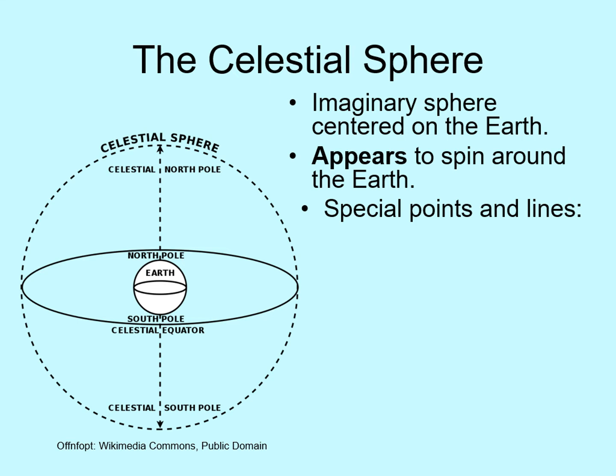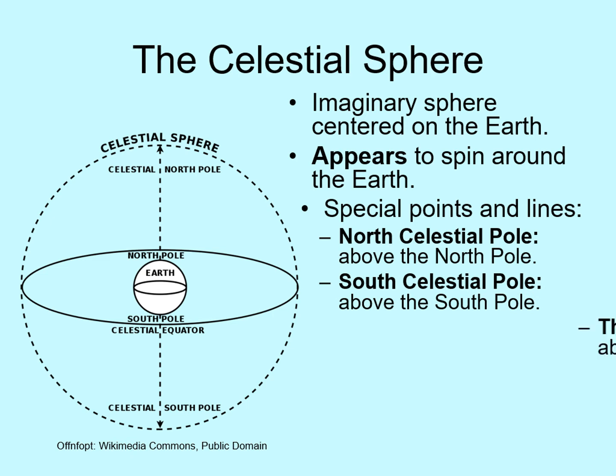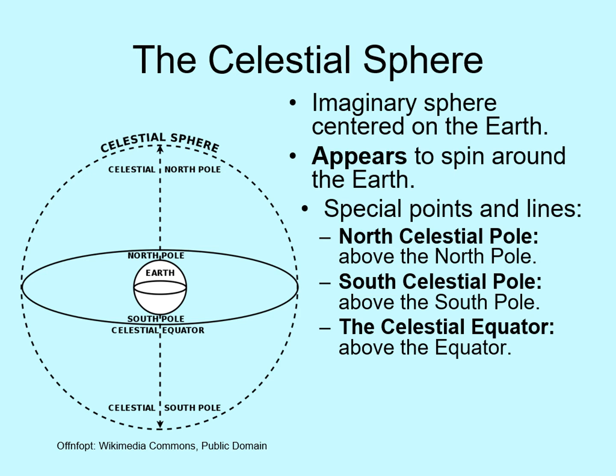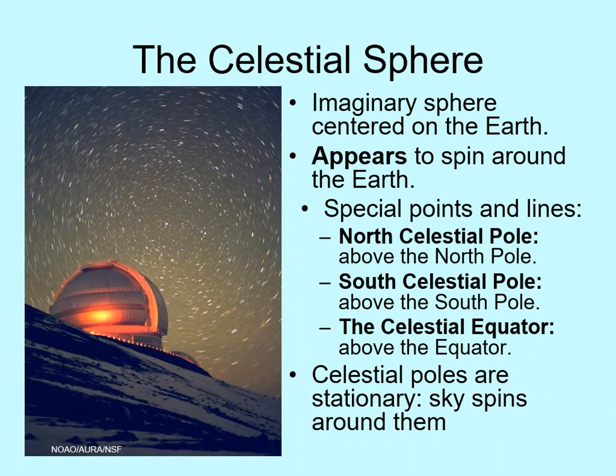On any spinning ball, there are a few special locations: the poles and the equator. The poles are the stationary points that the ball spins around, while the equator is the line halfway between those poles. Since we're now pretending that the Earth is sitting still and it's the celestial sphere spinning around us, the celestial sphere must have north and south celestial poles, as well as a celestial equator. The celestial poles are just an extension of the Earth's north and south poles out into space. Since the celestial poles are stationary points, the sky appears to spin around them every day. If you know where one of the celestial poles is in your sky, you can figure out how everything else will appear to move, because it will all just seem to rotate around that one point.